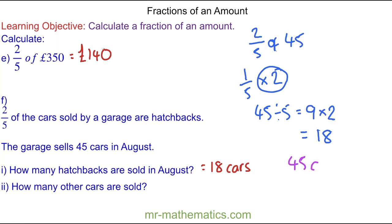Well, we have 45 cars in total. Take away the 18 cars, which were hatchbacks. And we can do this using the column method. 45 take away 18.